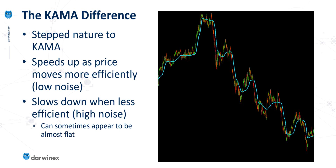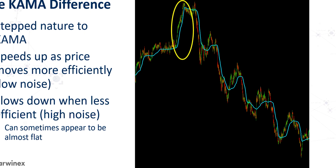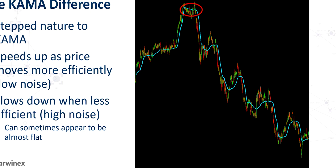Sometimes, under noisy conditions, the line even looks flat. Let's focus in on a few areas of this chart. Here, we can see that the price is moving fairly efficiently in an upwards direction, and because of that, the Kaufman Adaptive Moving Average is chasing price rapidly, using a small number of periods which makes it move fast. We can see similar behaviour all the way through this particular price action. However, look at this area — price isn't really going anywhere, yet there is a relatively large amount of noise, with price going up and down continually. During this period, the Kaufman Adaptive Moving Average is fairly flat. We can see this similar behaviour here, and here, and so on.